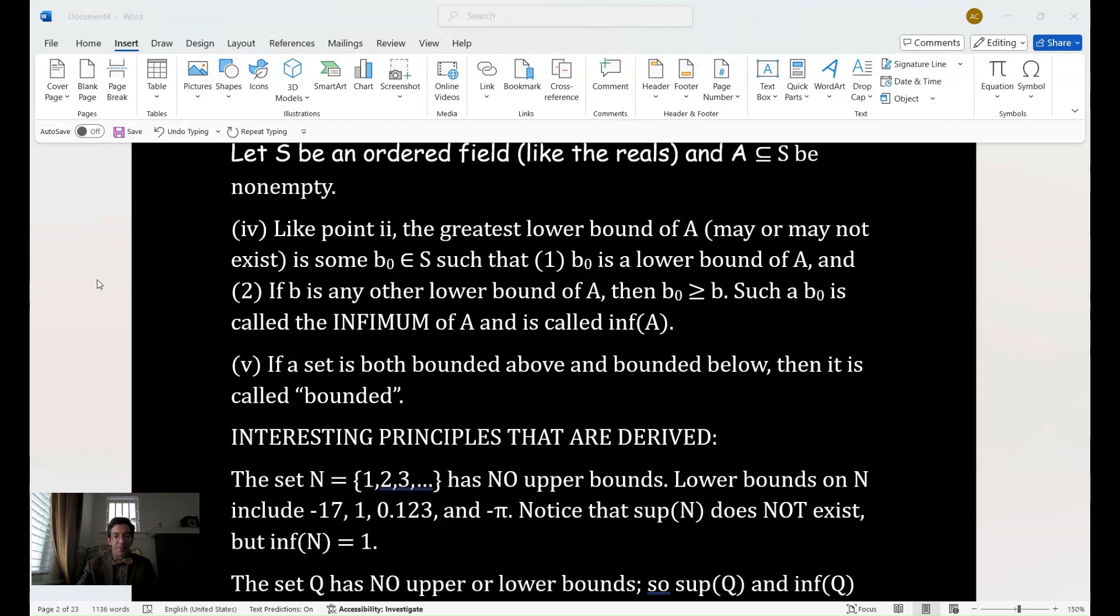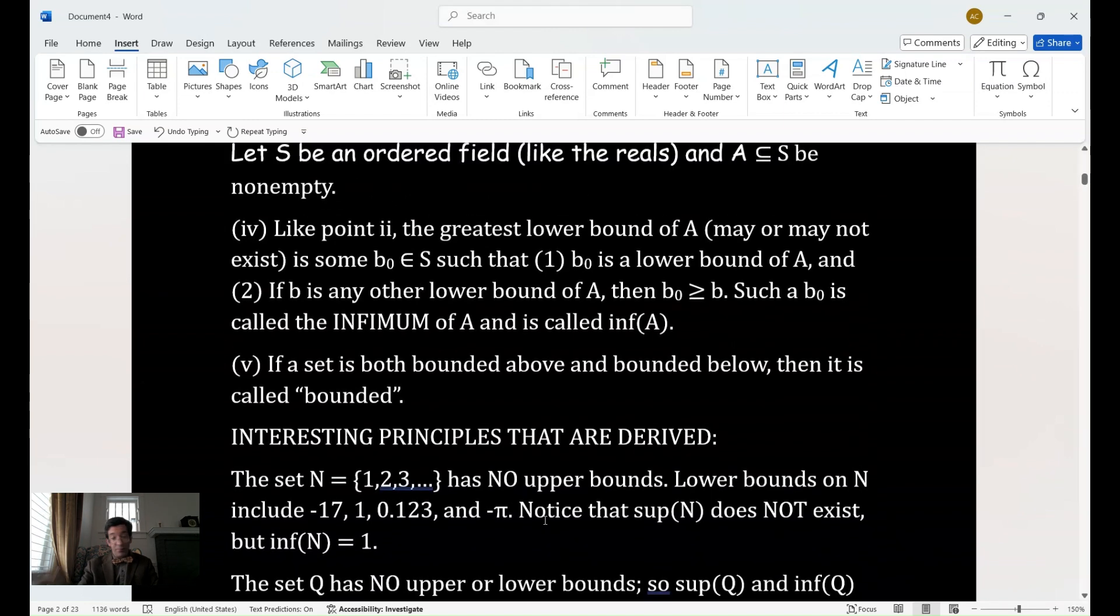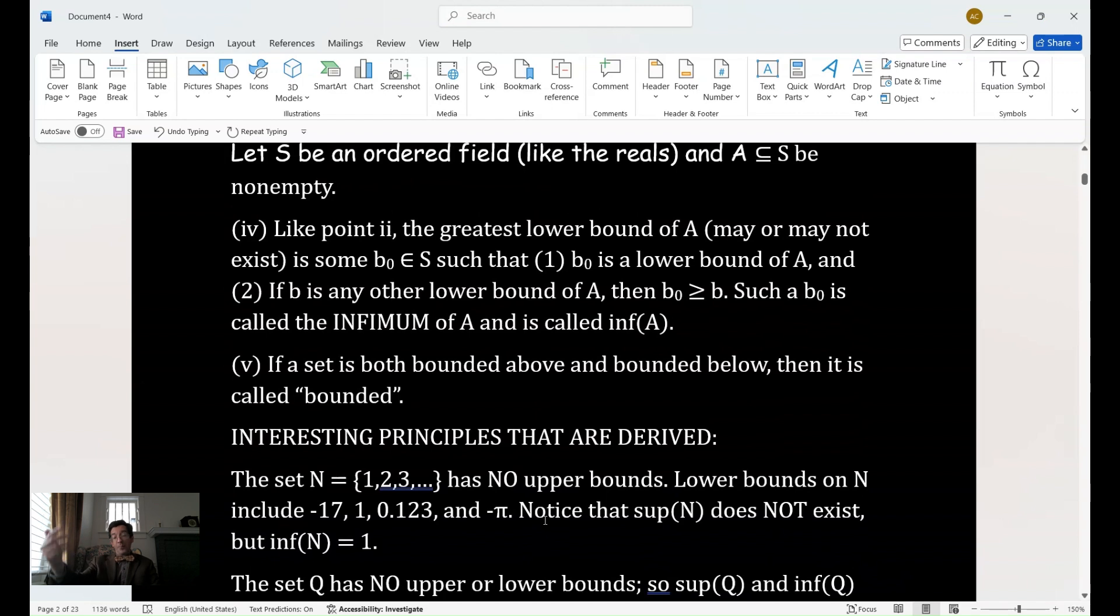The first one is, notice that the set of natural numbers, the N. The set of the natural numbers, notice it has no upper bounds. And the lower bounds on N, however, include negative 17, 1, 0.123, and even negative pi.